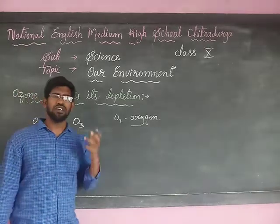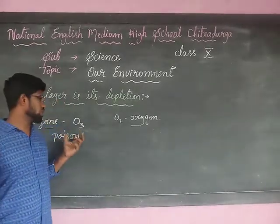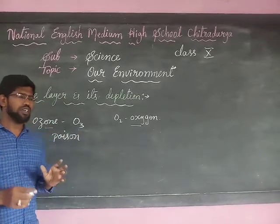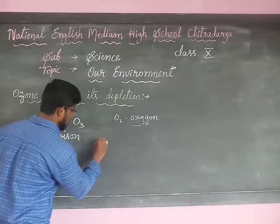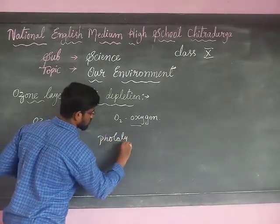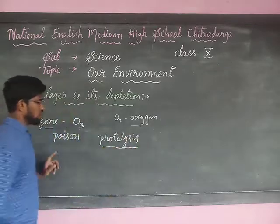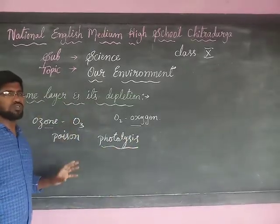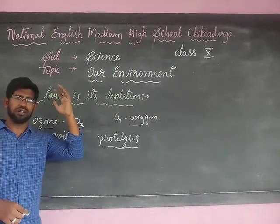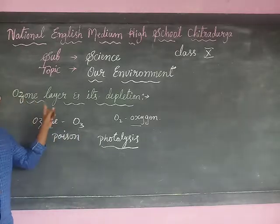Ozone is very dangerous to living beings. This ozone is formed by the process of photolysis. By the process of photolysis, the ozone is formed. This ozone goes up above the earth's surface, making a layer which is called the ozone layer.